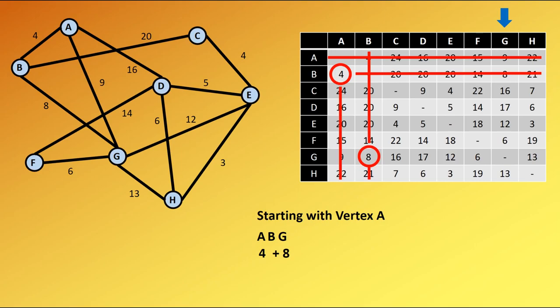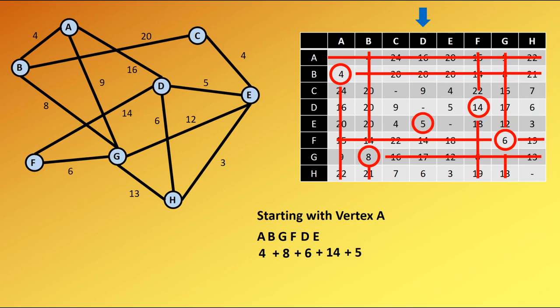Next we're going to look at G. The nearest neighbor to G is 6 away, it is F. So we cross out G and move to F. The nearest neighbor for F is 14, it's D. We cross out those rows and columns and move to looking down the D column. The nearest neighbor is E for 5, get rid of D. Look down the E column, it's H for 3, get rid of the E row and column.